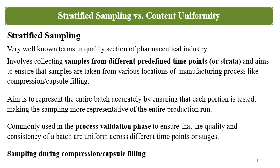Stratified Sampling and Content Uniformity, also known as Uniformity of Dosage Units, are terminologies very well known in the pharmaceutical field and mainly in the quality section of the pharmaceutical industry. Whether the product is in the research phase, exhibit phase, or commercial phase, Stratified Sampling and Content Uniformity play a very critical role.